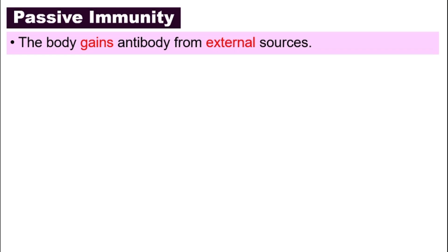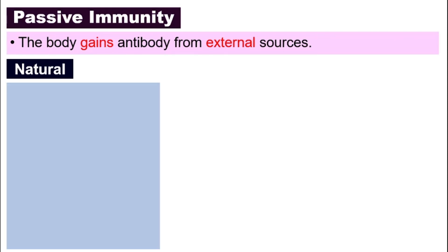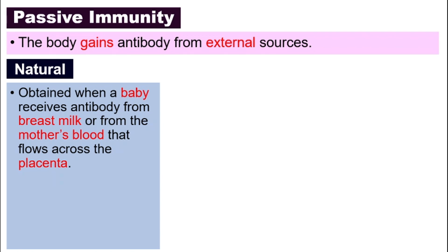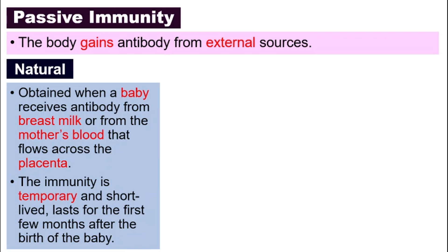For passive immunity, we do not produce antibodies — we get the antibody from outside our body. The natural passive immunity actually happens in babies. Babies get antibodies from the mother in two ways: if the baby is already born, the baby gets antibodies from the mother's breast milk. If the baby is still in the mother's womb, the baby can get antibodies from the mother's blood that flows across the placenta. This immunity is very short — it is only temporary, because passive immunity means we don't produce antibody ourselves.